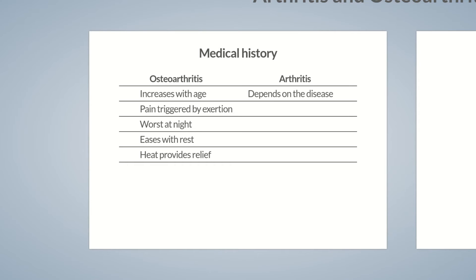Let's move on to pain. Contrary to osteoarthritis, pain at rest is one of the characteristics of arthritis. Accordingly, patients report increased pain in the morning after sleep or long periods of rest. The term morning stiffness is used here and is an important indicator of arthritis. By definition, morning stiffness is present if pain persists for more than 30 minutes after waking.